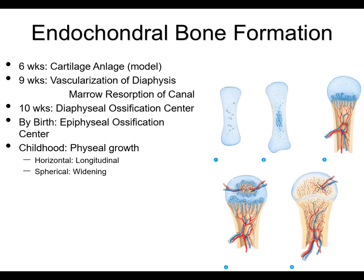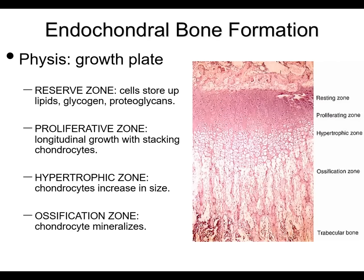Focusing on endochondral bone formation: here's a quick overview of how a long bone like the humerus would form embryologically. At six weeks you have this cartilage model, then you develop vascularization, get some resorption in the canal, and start to form the medullary canal. Then you get a secondary ossification center with blood supply coming in, separated by the growth plate. What forms is a physis, or the so-called growth plate, which is where new bone forms until maturity. The physis is that growth plate — a cartilage model that then forms bone.